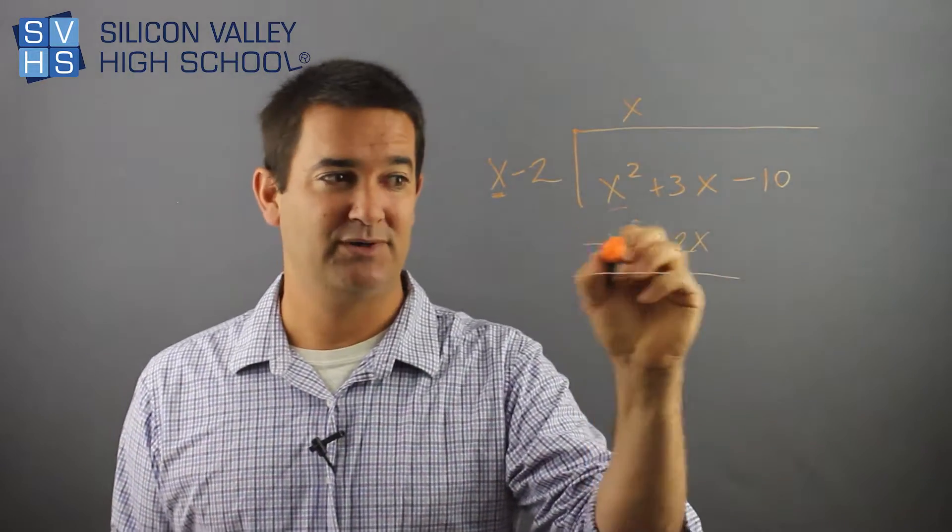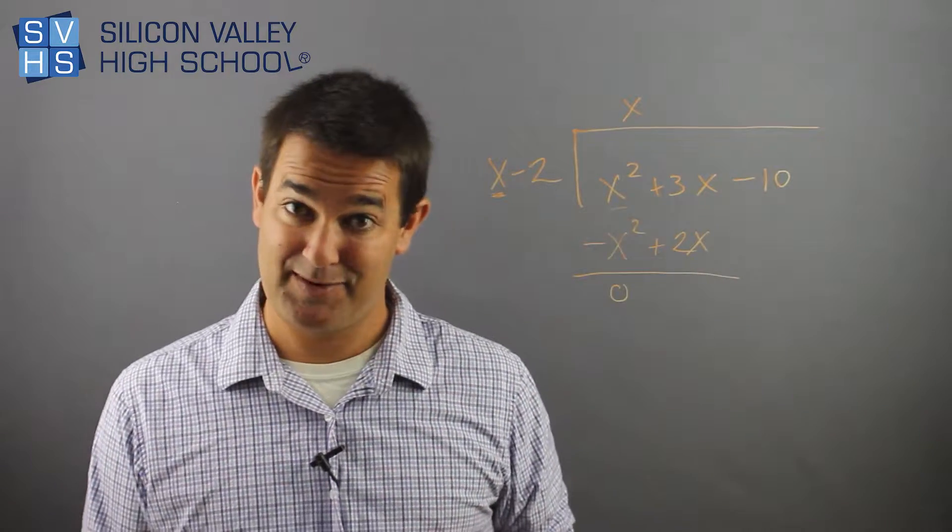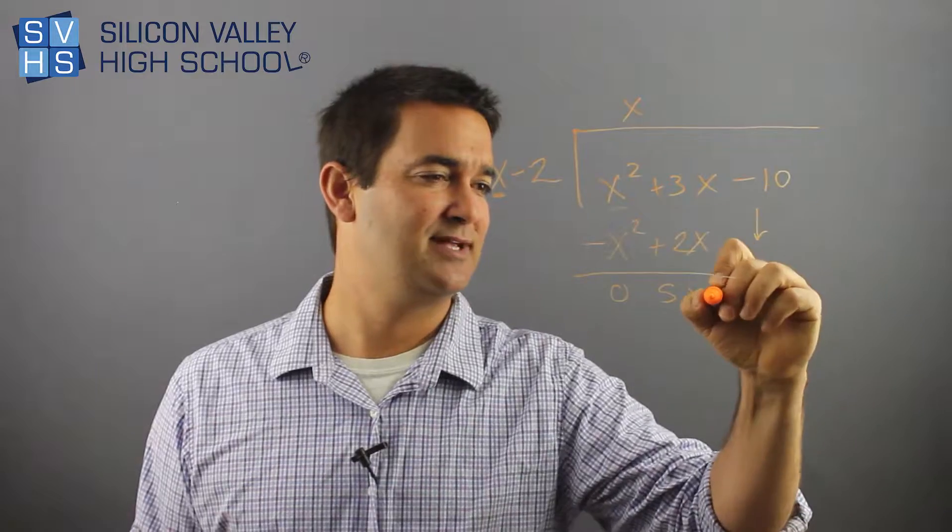Now, you draw your line. I've changed both signs. Now, I add down. Oh, they're gone. That's not an accident. I did that on purpose. This guy becomes 5x, and then we carry down the negative 10.